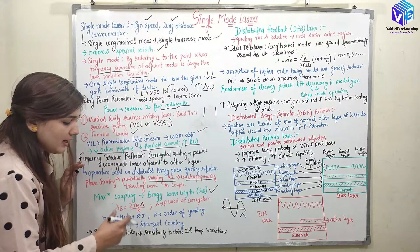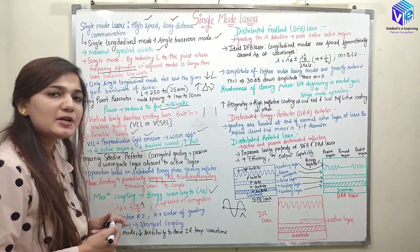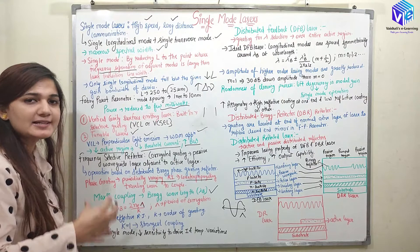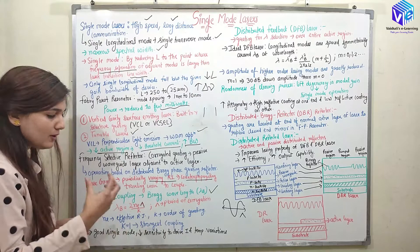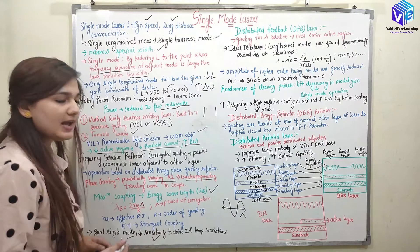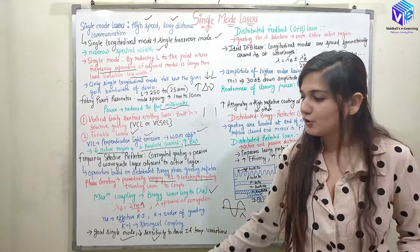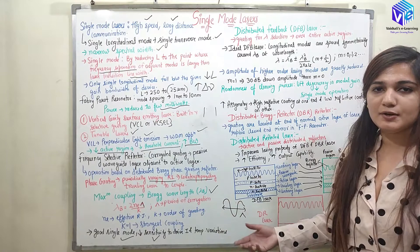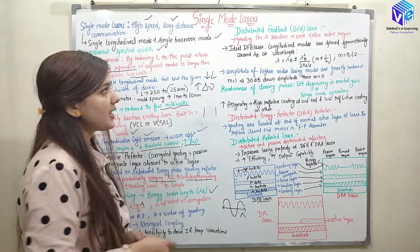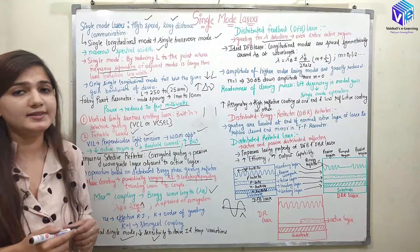Generally we choose k = 1 for the best output and maximum coupling. Sometimes k = 2 is chosen because fabrication becomes simpler at that order. This grating structure gives good single mode operation with less sensitivity to drive current and temperature variation. In the frequency selective reflector, there are three types: first is the DFB — distributed feedback laser — where the grating for wavelength selection is spread over the entire active region.